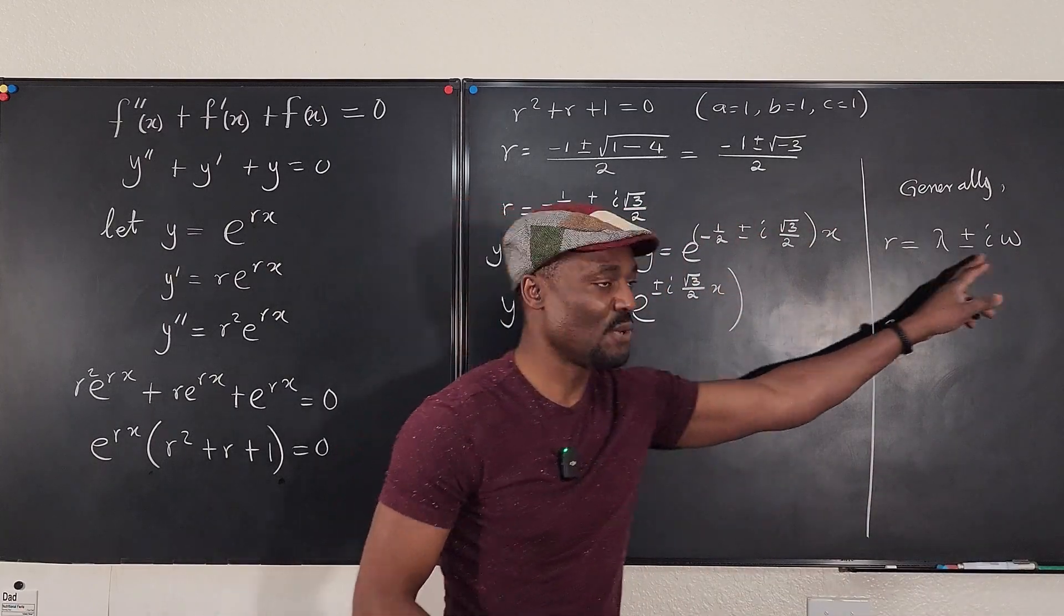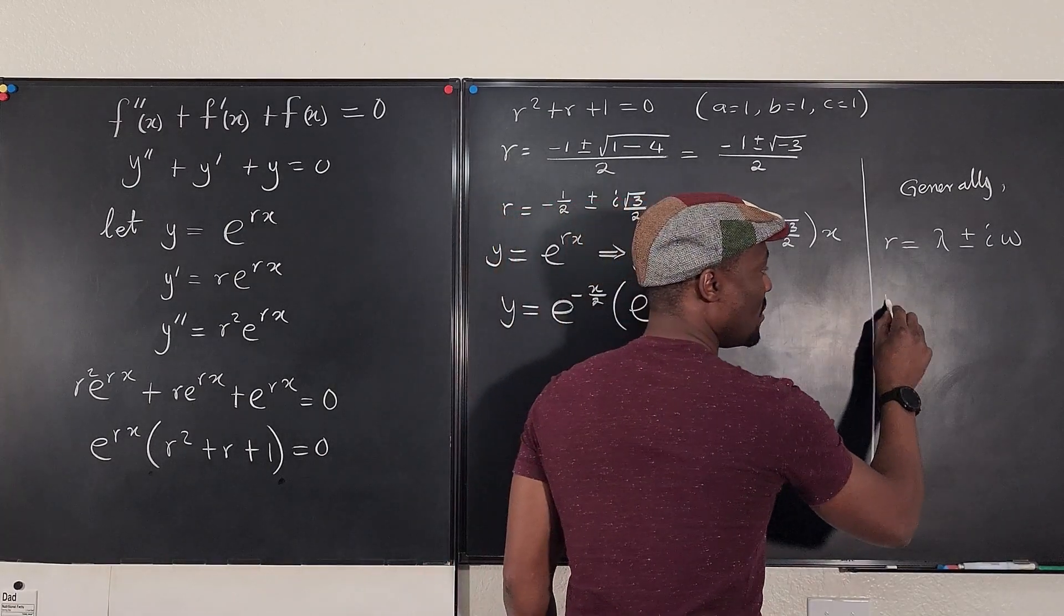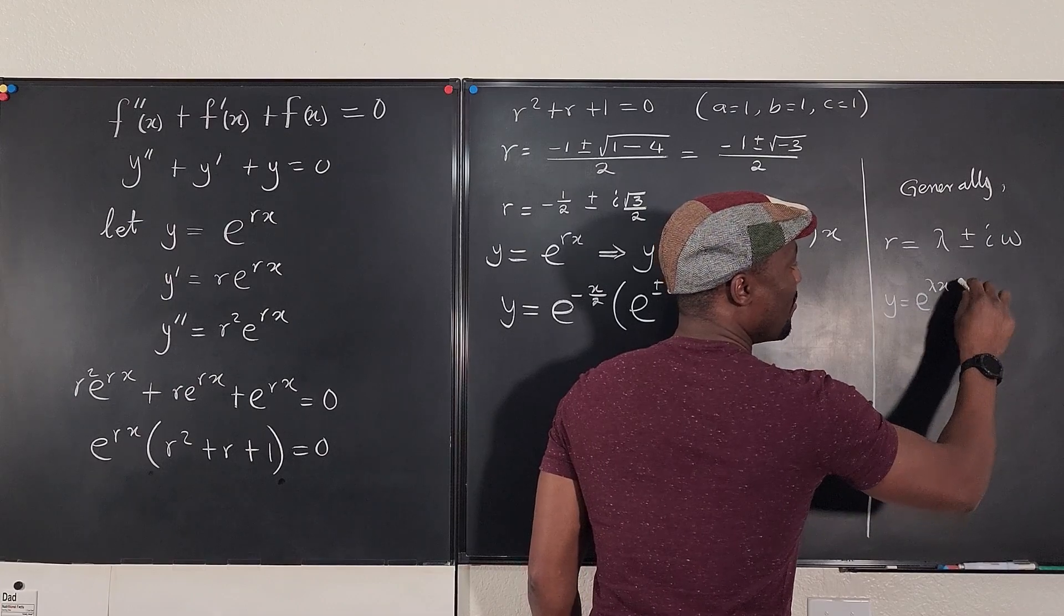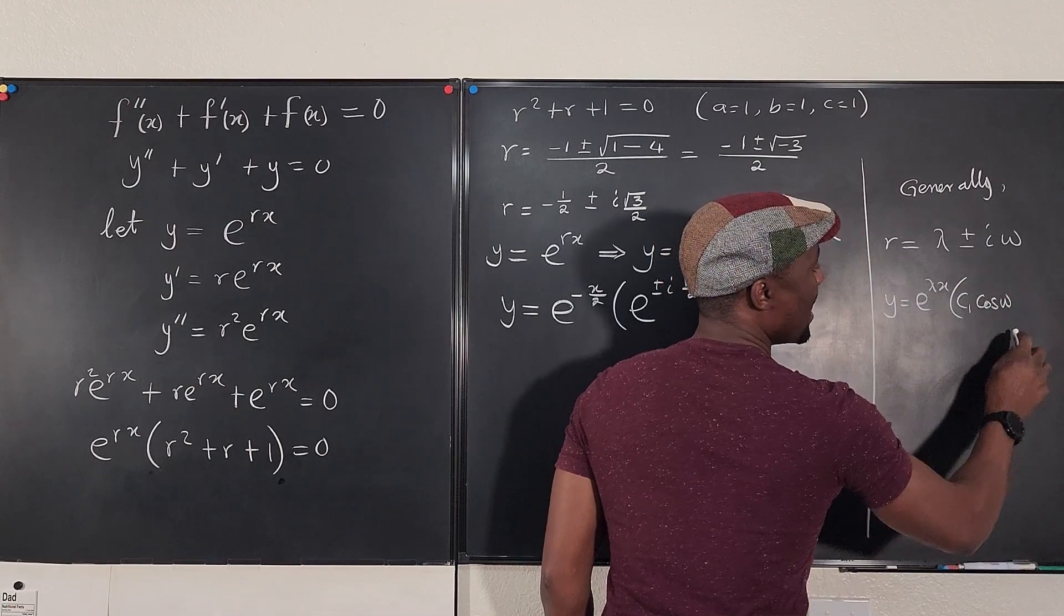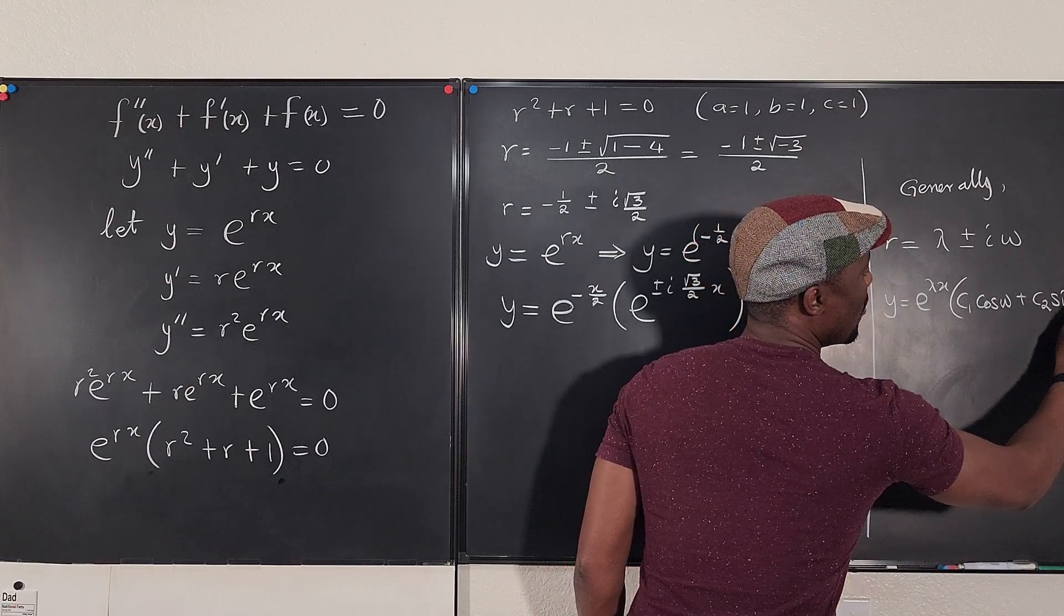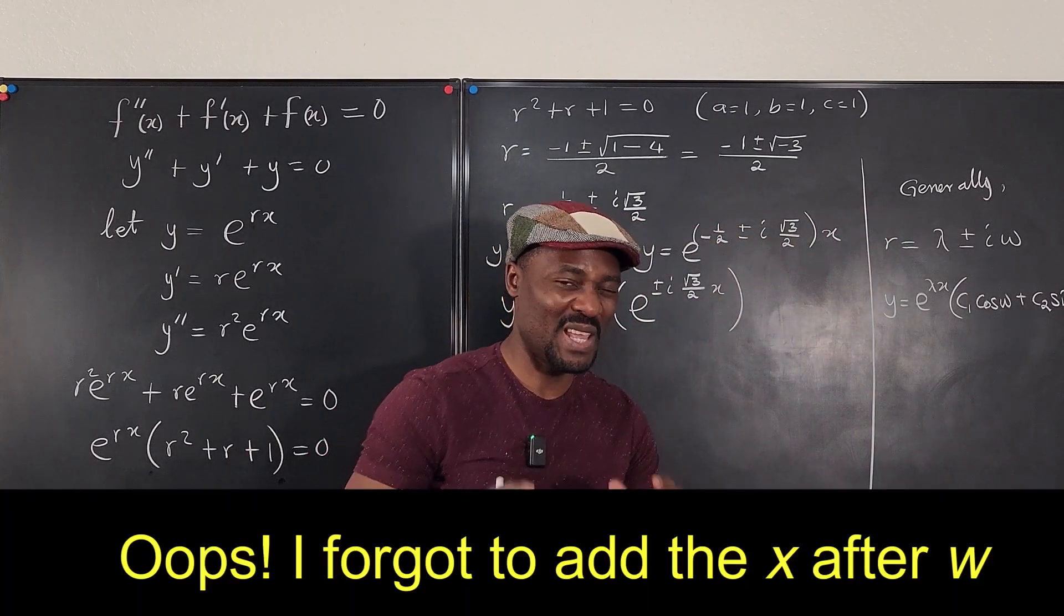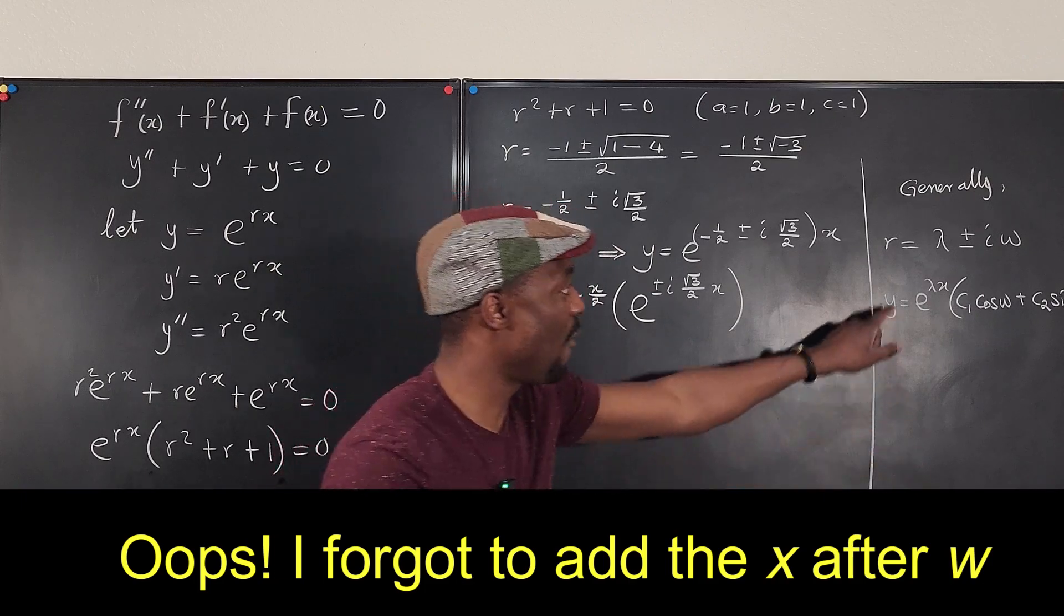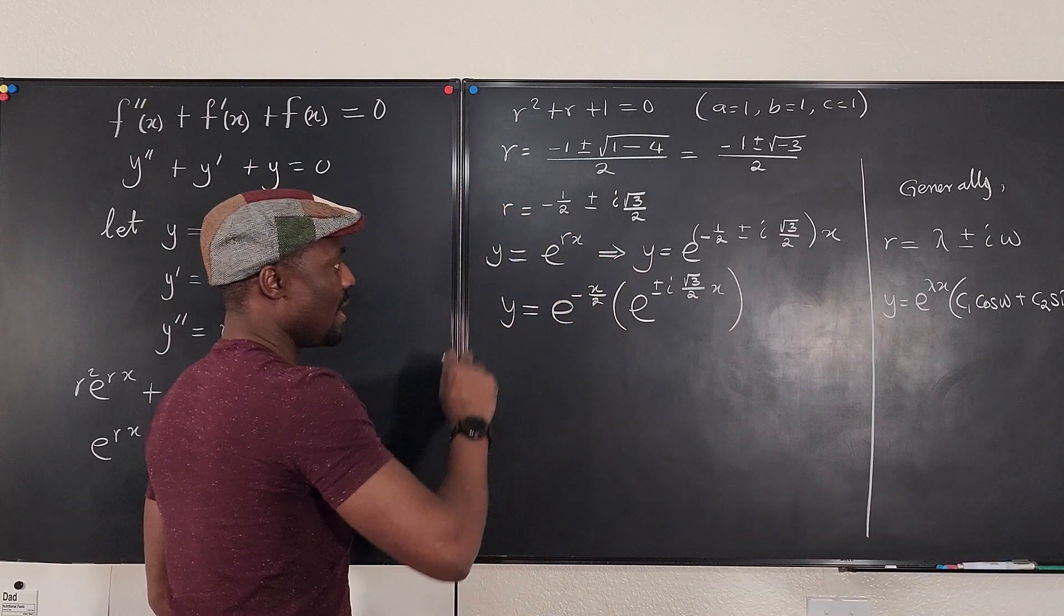The general solution is always e to the lambda x multiplied by c1 cosine omega x plus c2 sine omega x. The imaginary does not show any more in the answer. In another video, I'm going to explain why that is true. But for now, this is the sequence you want to make sure you master. And here we go.